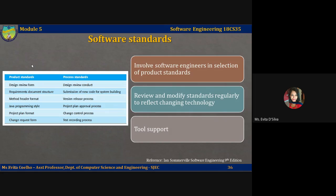To minimize dissatisfaction and to encourage buy-in to standards, quality managers who set the standards should take the following steps. First, involve software engineers in the selection of product standards. If developers understand why standards have been selected, they are more likely to be committed to them. Ideally, the standards document should not just set out the standard to be followed, but should also include commentary explaining why standardization decisions have been made.